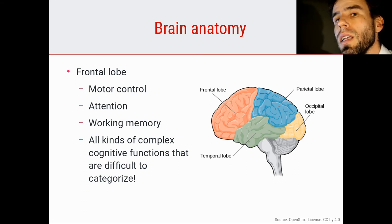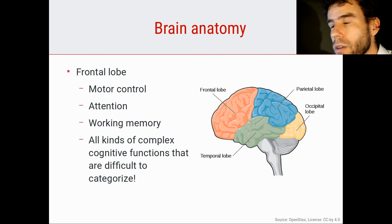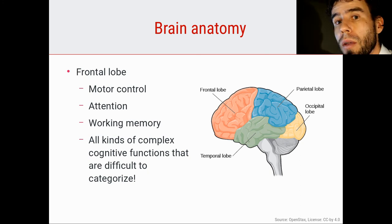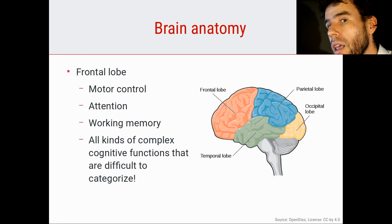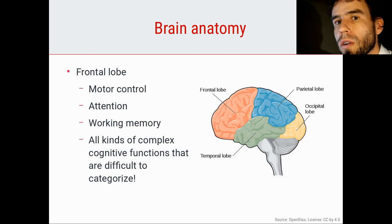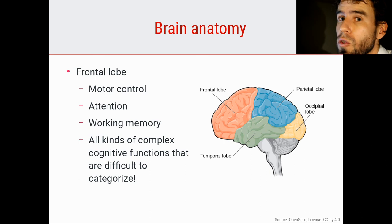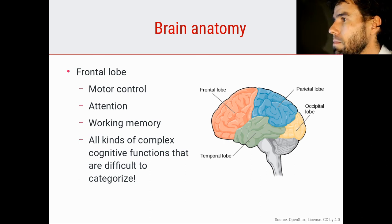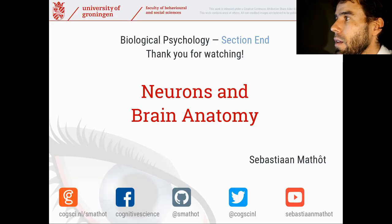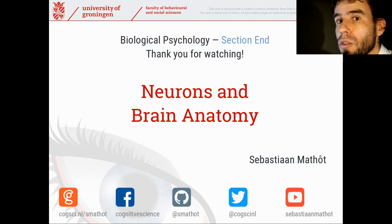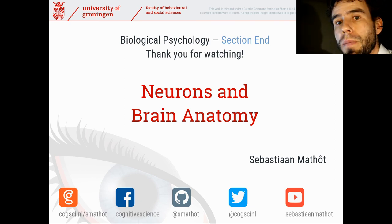The frontal cortex is something we actually understand very little. If you saw the introductory lecture, I recommended the book 'How Intelligence Happens' by John Duncan, who talks a lot about the frontal cortex, explaining the few things that we actually do understand about it. With that, thank you very much for watching this final video in the section on neurons and brain anatomy, which is part of the course Biological Psychology.